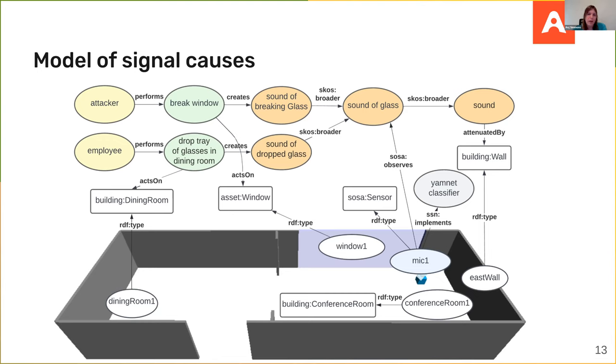What we can then do is take the signal knowledge graph at the top there, and link it up with our model of the buildings and the sensors. For example, breaking a window can occur on any of the windows in the building, and dropping a tray of glasses is most likely to occur in dining rooms. And then our microphone there is linked up to say that it observes glass-related sounds using a particular classifier. The purpose of all this is once we've linked up our model of the building and the sensors to the signal knowledge graph, which describes the different signals involved and what the possible underlying causes of them, is hopefully we can reason a little bit about what's going on given the sensor data.